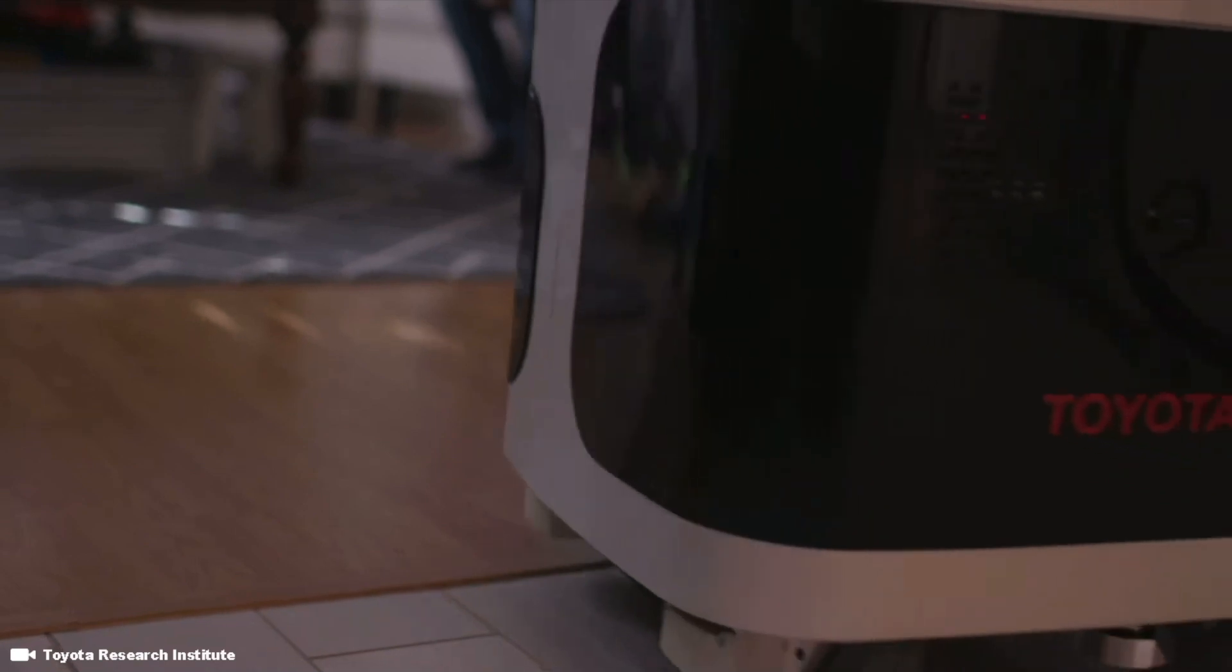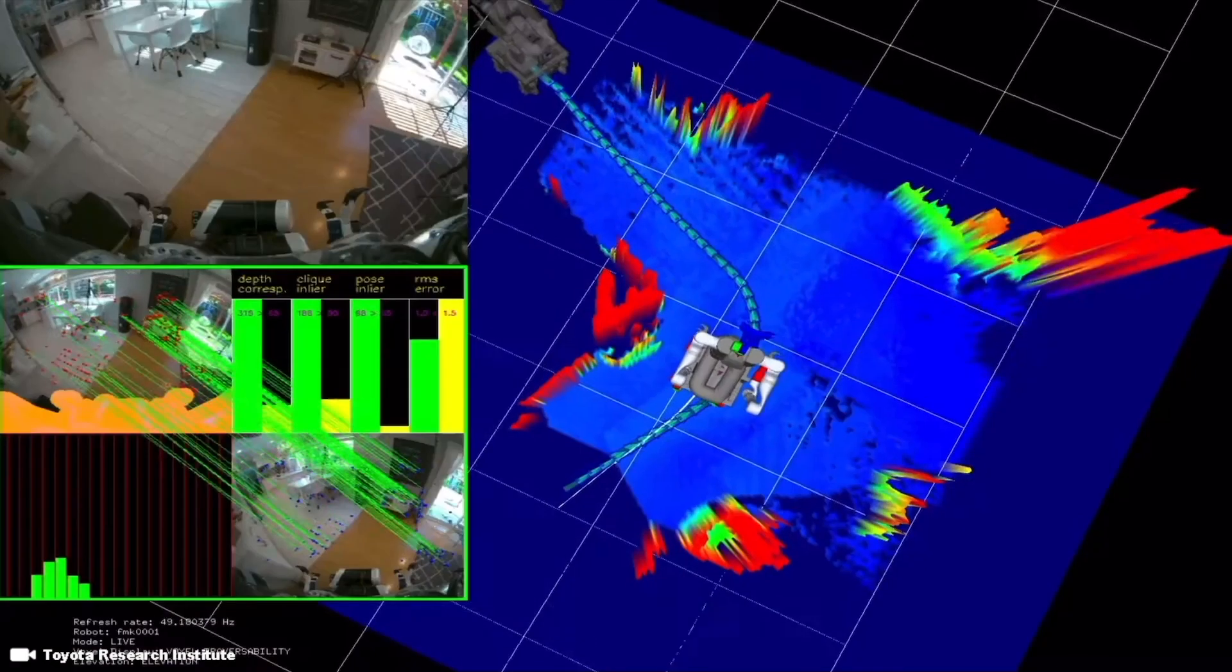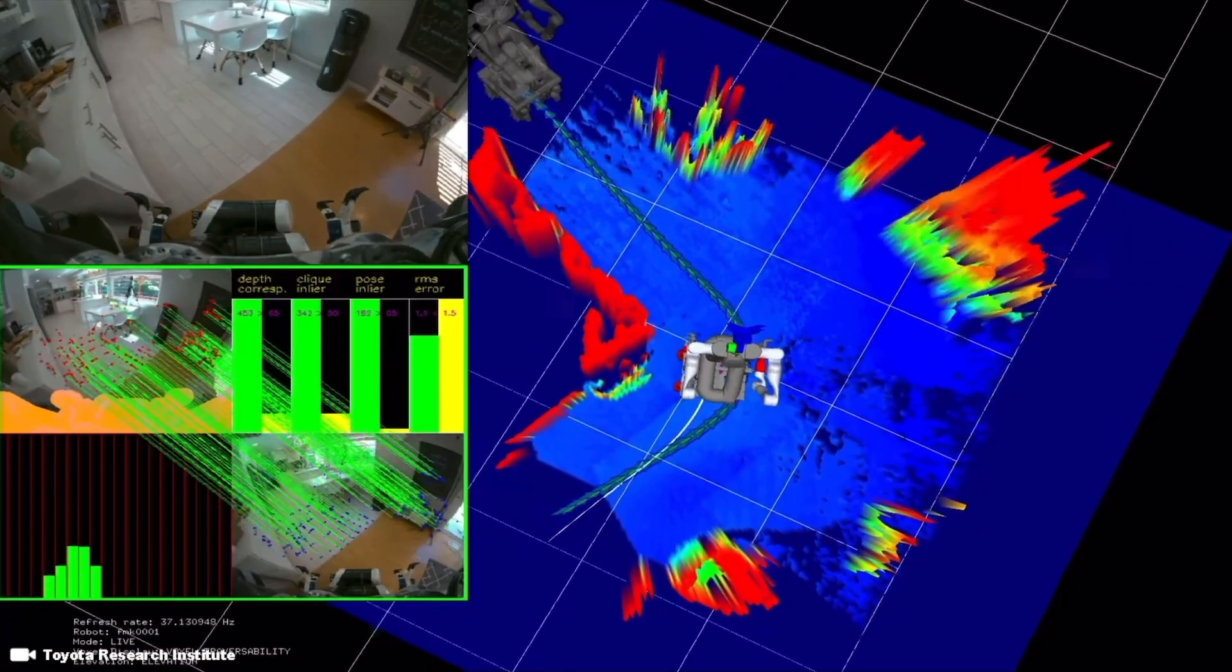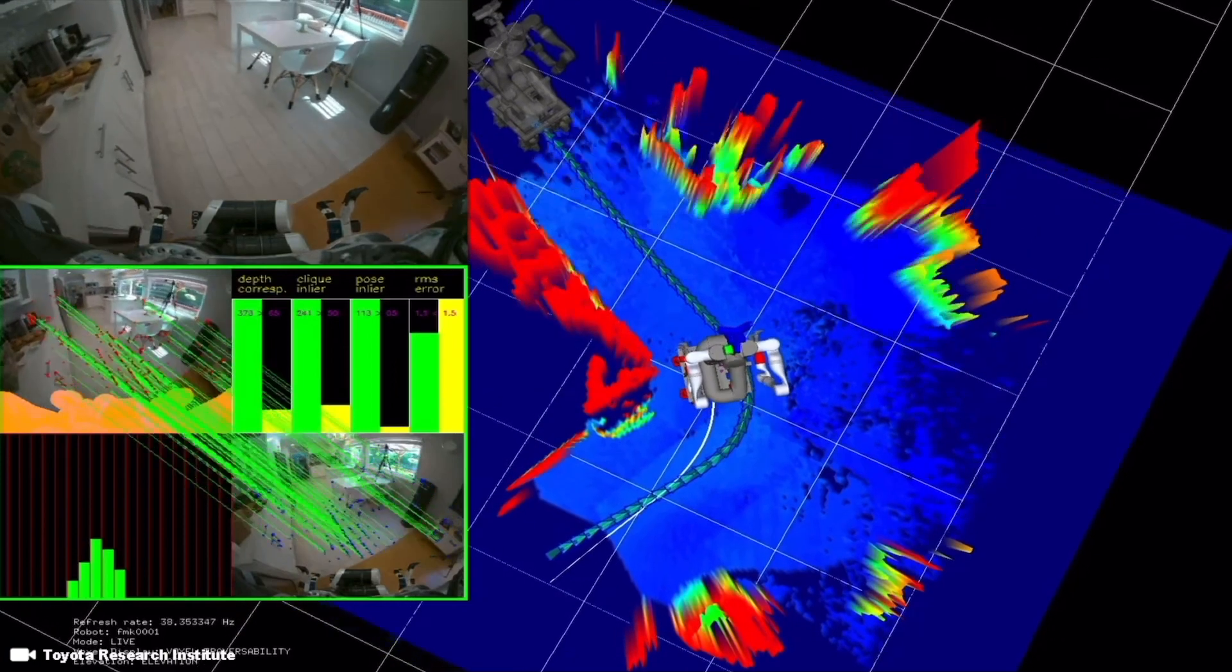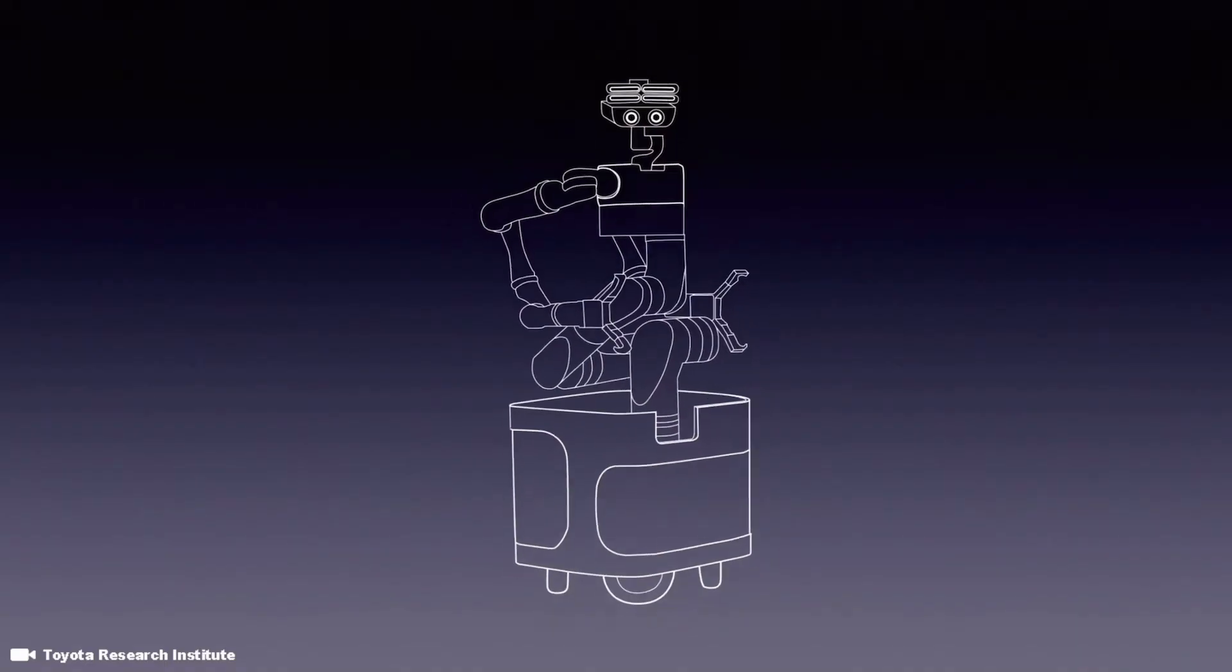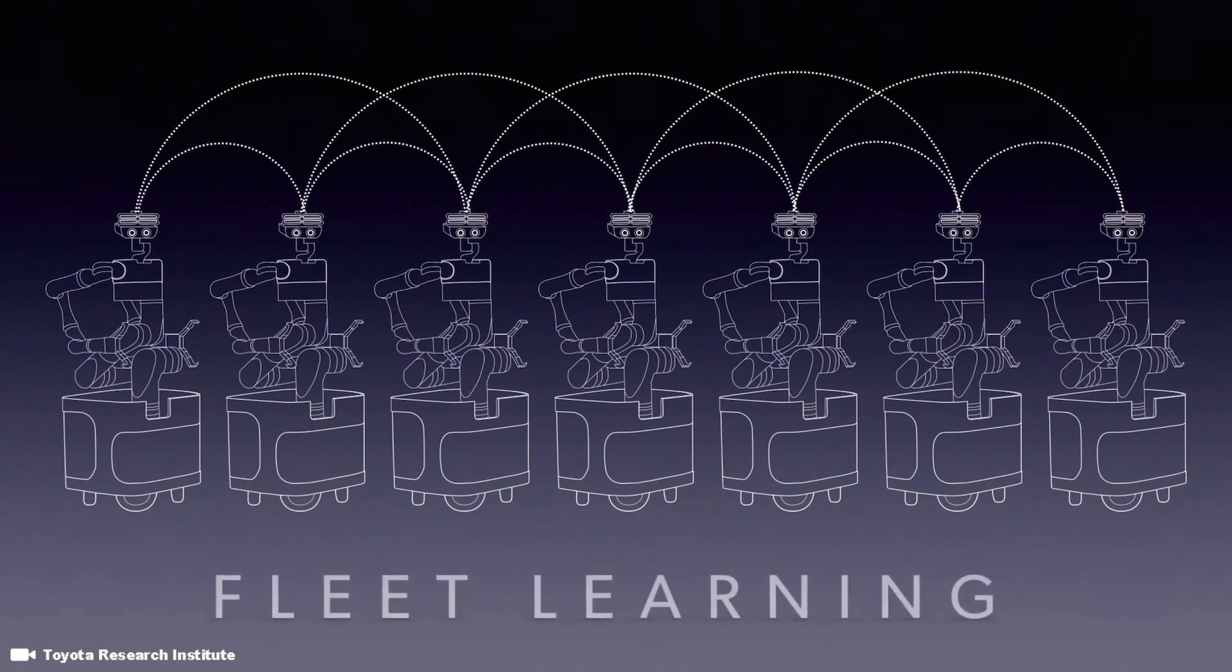We can also teach the robot about uneven surfaces in the home, those that it can drive over and those that it cannot. And we can teach it these things with just a very few examples. And once one robot learns that skill, it can pass that skill on to other robots. We call this fleet learning.